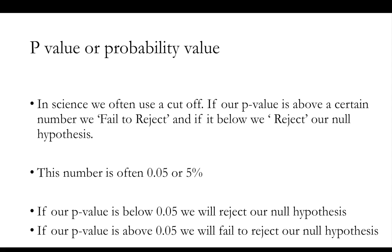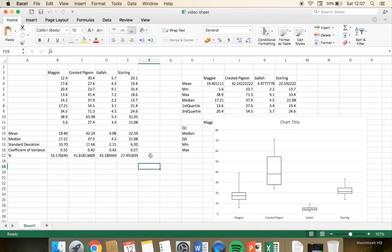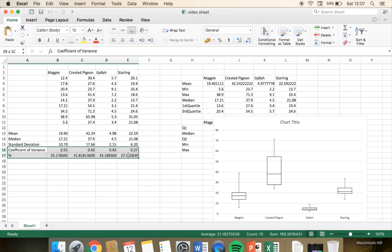If our p-value from the ANOVA is below 0.05, we are going to reject our null hypotheses. If our p-value is above 0.05, we're going to fail to reject our null hypotheses. So we're going to look at the data and see what we've got. Going back into the data sheet, we're going to remove the coefficient of variance — that's not really important — so I'm just going to delete that.